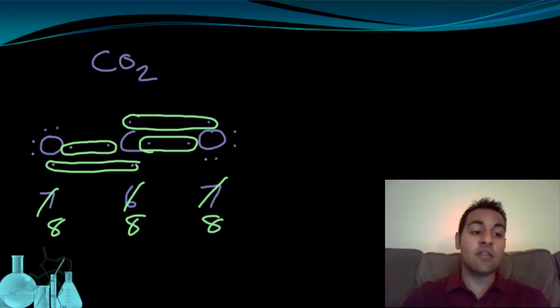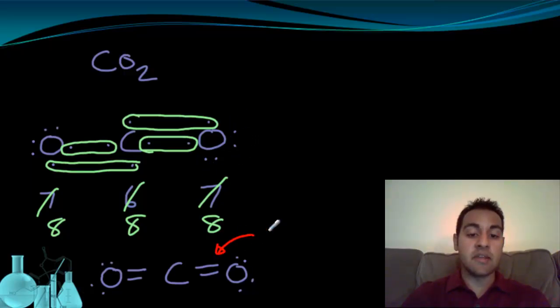When I go to write the Lewis structure for this, those change into lines. So the carbon has two lines going to the right and two lines going to the left. The carbon has no more non-bonding electrons on it, so I leave it alone. But these oxygens have pairs left over. And I'm going to just bring them down. One, two, three, four on that one. One, two, three, four on that one. Just bringing them down from what was left over, these non-bonding electrons.